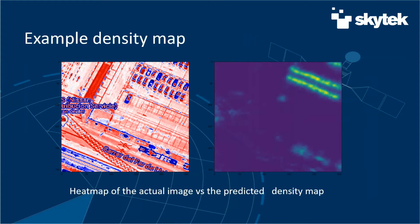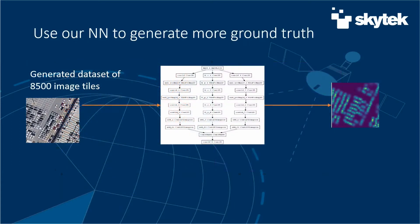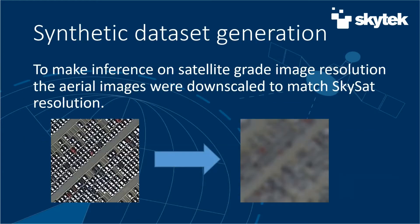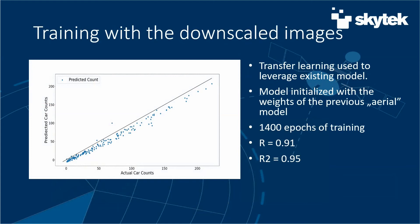This example shows how the heatmap of the actual image is represented as a density map. Once we had a good model, we used it to generate more ground truth and proceeded with generating a synthetic dataset. To make inference on satellite-grade image resolution, the aerial images were downscaled to match the resolution of the Skysat satellite used in this project. The model was then trained with the downscaled images using transfer learning, initialized with the weights of the previous aerial model. We trained for 1,400 epochs and achieved an R-value of 0.95, which is very good.